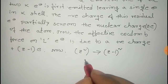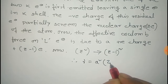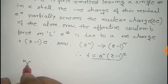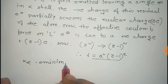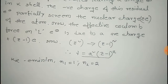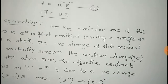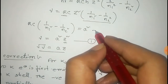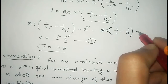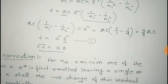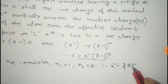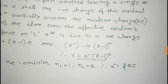The equation now becomes: ν = a²(Z − 1)². For K-alpha emission, this transition occurs from n1 = 1 to n2 = 2. Substituting these values, we get: a² = Rc × (1/1² − 1/2²) = Rc × (1 − 1/4) = (3/4)Rc.